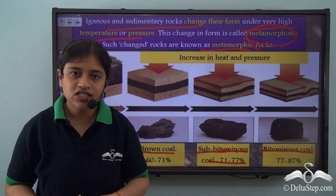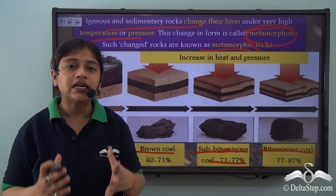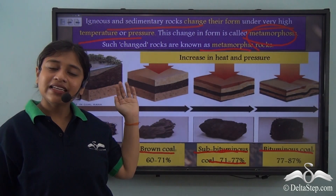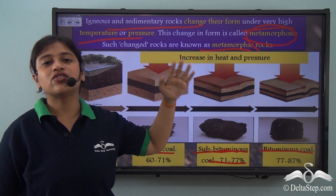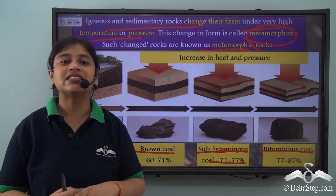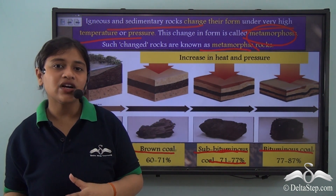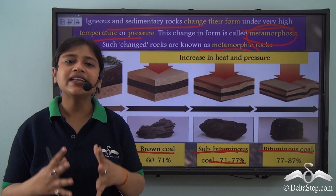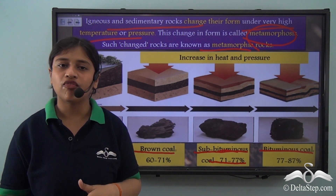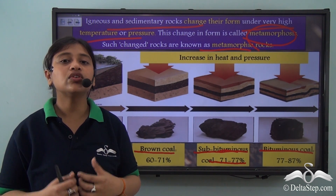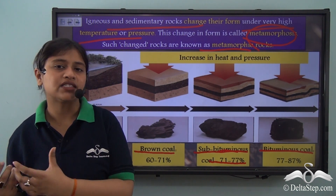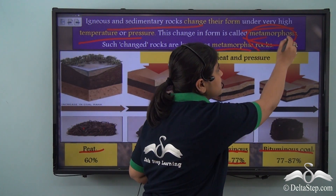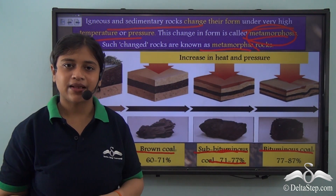Metamorphic rocks, the third type of rocks, are formed when igneous and sedimentary rocks experience change in temperature and pressure. Under high temperature and pressure they change their form to give rise to metamorphic rocks, and this process is called metamorphosis.